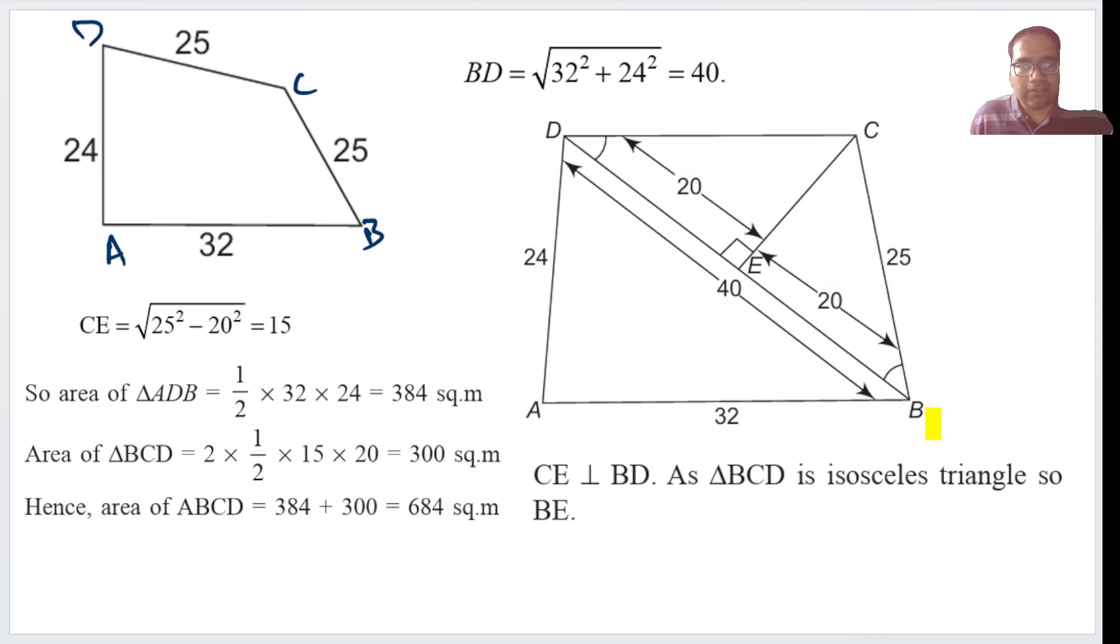Similarly, area of BCD. BCD is this plus this, both are exactly the same. Half into base into CE into total BD 40, or we can take 20 and twice of that. Half into CE which is 15 into BD which is 40, which gives us 300.